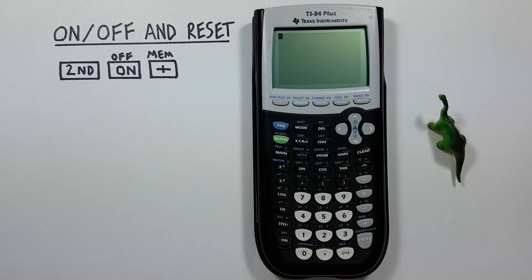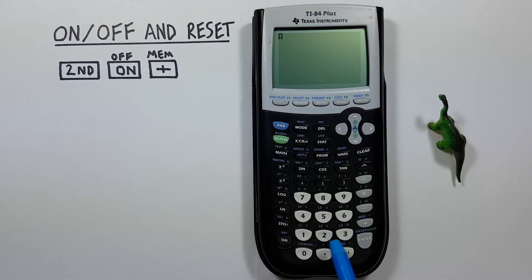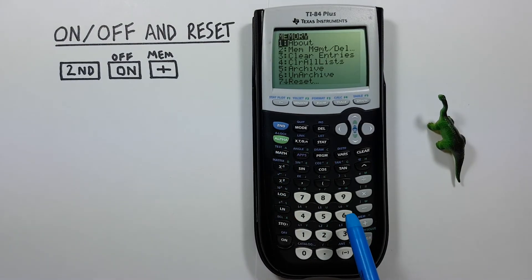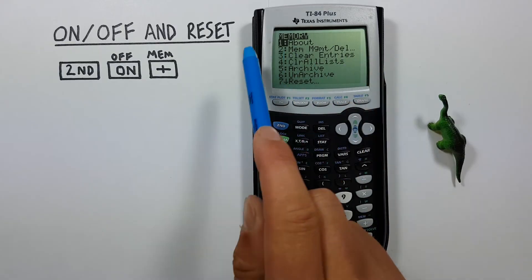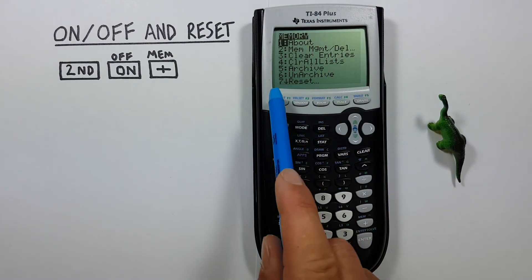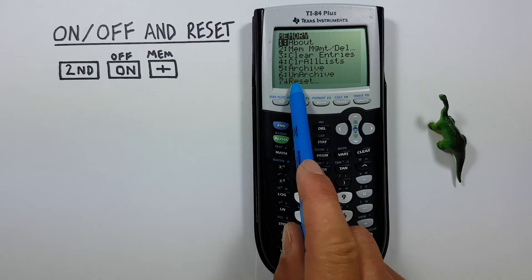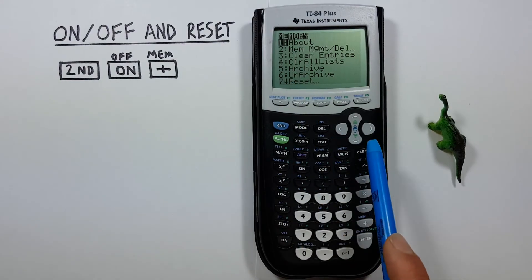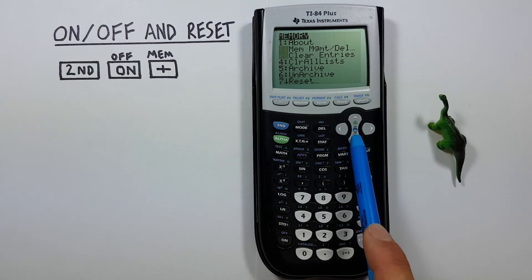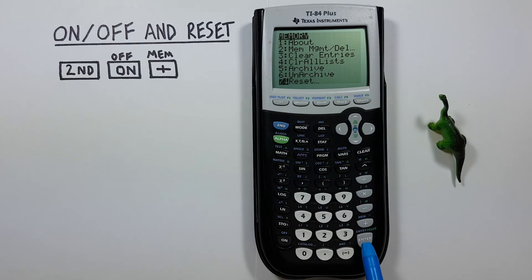To do that, we use the second function key and then the plus key, which brings you to the memory menu here. All the way down at number seven you'll see Reset — so you can either scroll all the way down and press Enter, or just press seven.